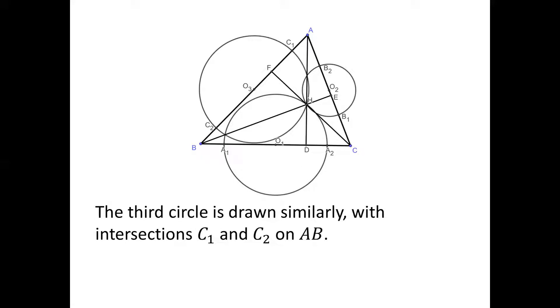The third circle is drawn in a similar manner with center O3 also passing through H with intersections C1 and C2 on AB.